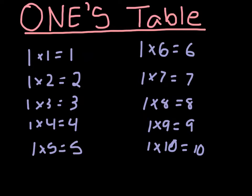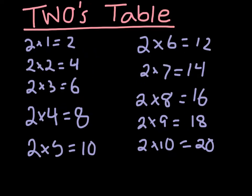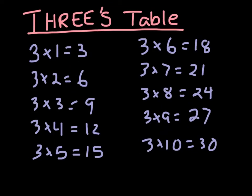Let's go on to our twos table. Make sure — I'm going to keep stressing this — that you have to memorize these. They are very, very important and will come in handy in future topics. So: 2 times 1 is equal to 2, 2 times 2 is equal to 4, 2 times 3 is equal to 6, 2 times 4 is equal to 8, 2 times 5 is equal to 10, 2 times 6 is equal to 12, 2 times 7 is equal to 14, 2 times 8 is equal to 16, 2 times 9 is equal to 18, 2 times 10 is equal to 20.